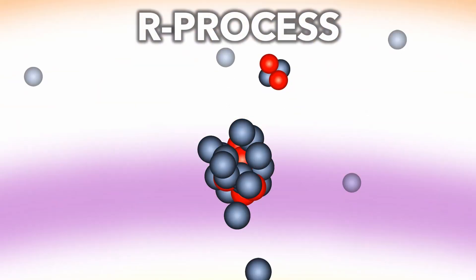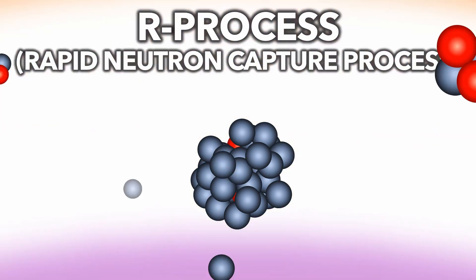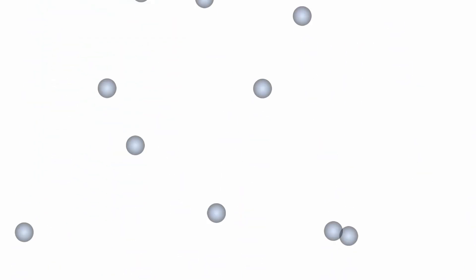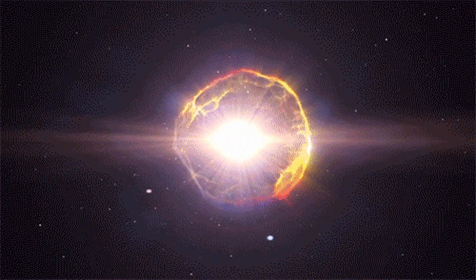Some of the neutrons blasted outward by the shockwave are absorbed by large nuclei, creating heavy elements like gold, lead and uranium, crucial for life. These elements are then flung into space.